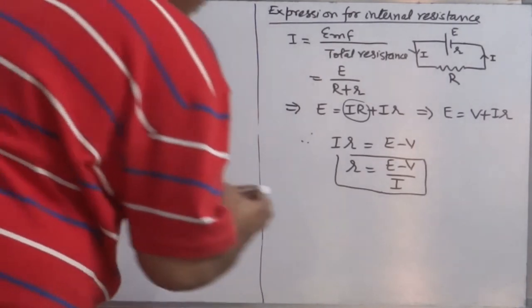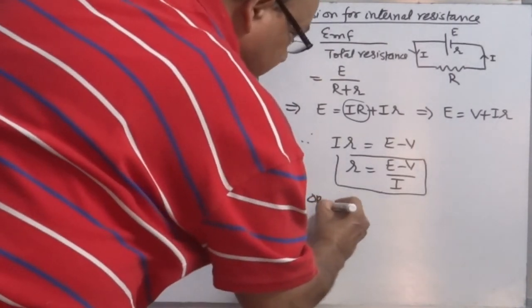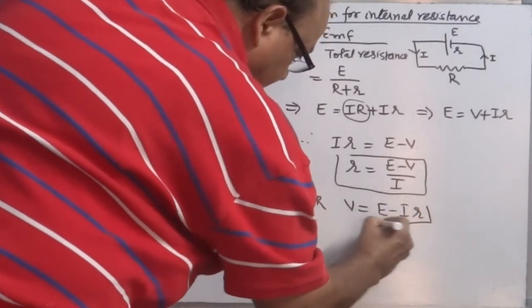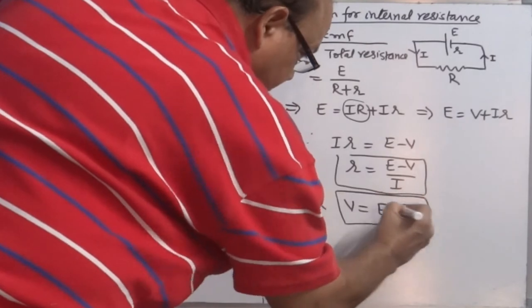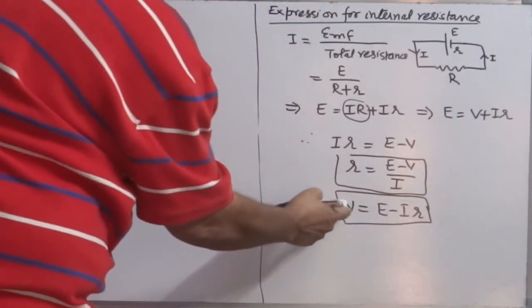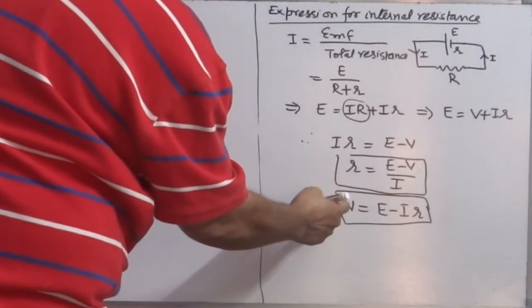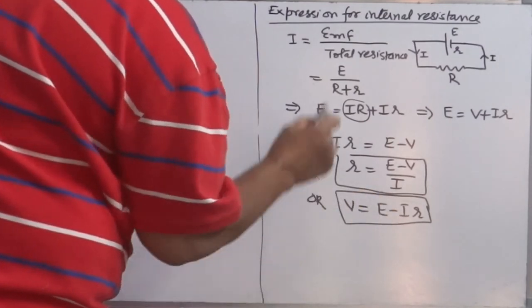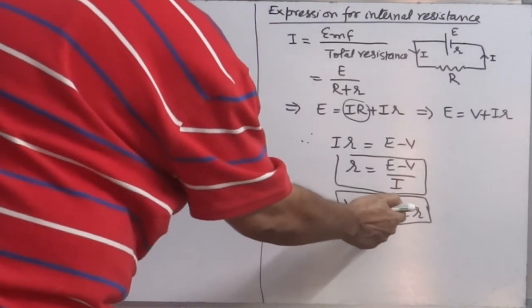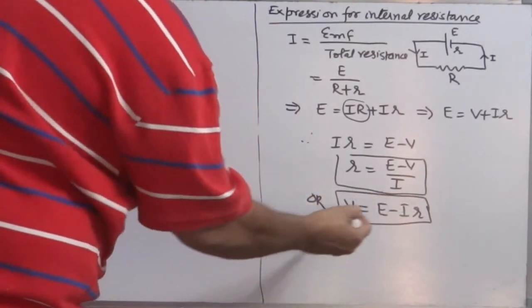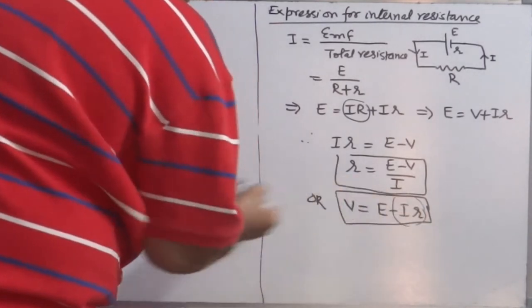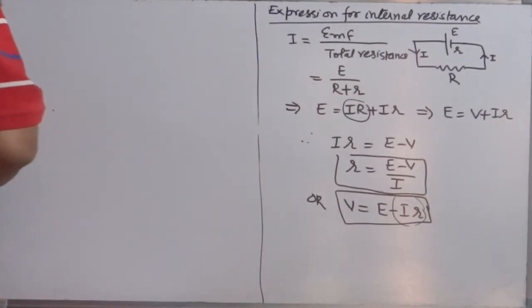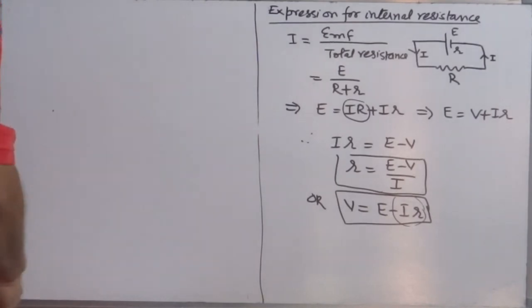You can also write this expression as V = E − Ir. Here V is the terminal voltage when you connect the external circuit; E is the maximum voltage, which is the EMF marked on the cell or battery. The output is always reduced by the factor I·r. So larger the internal resistance, lesser the output voltage.